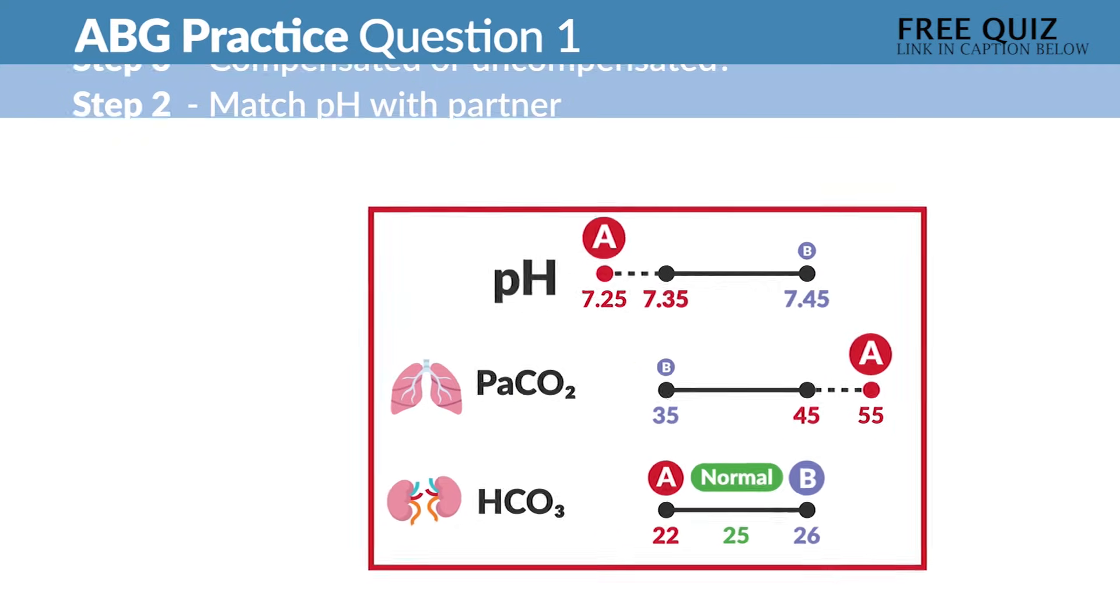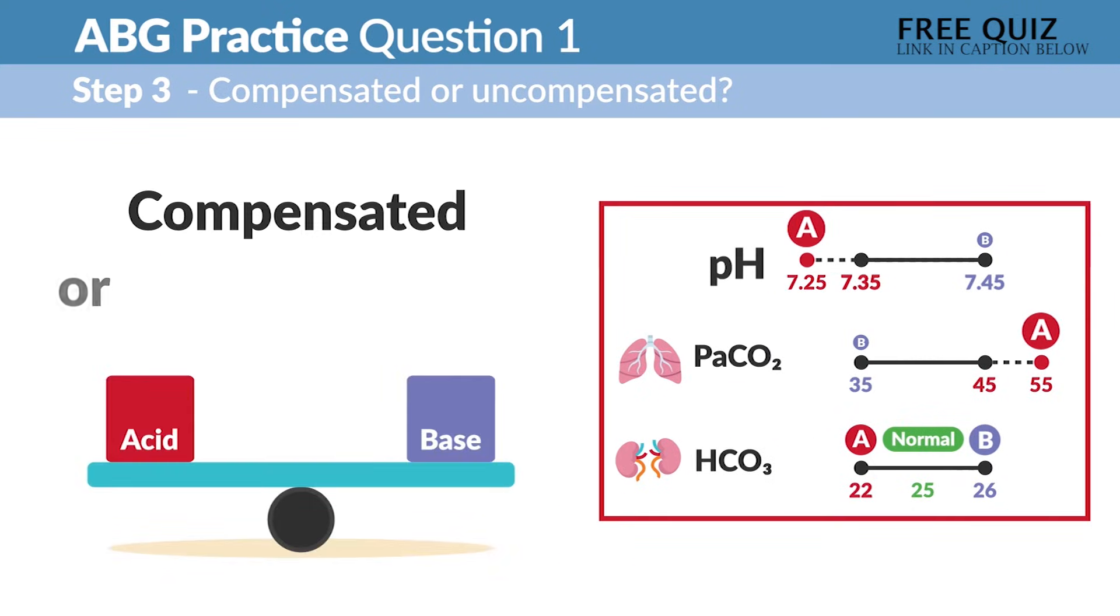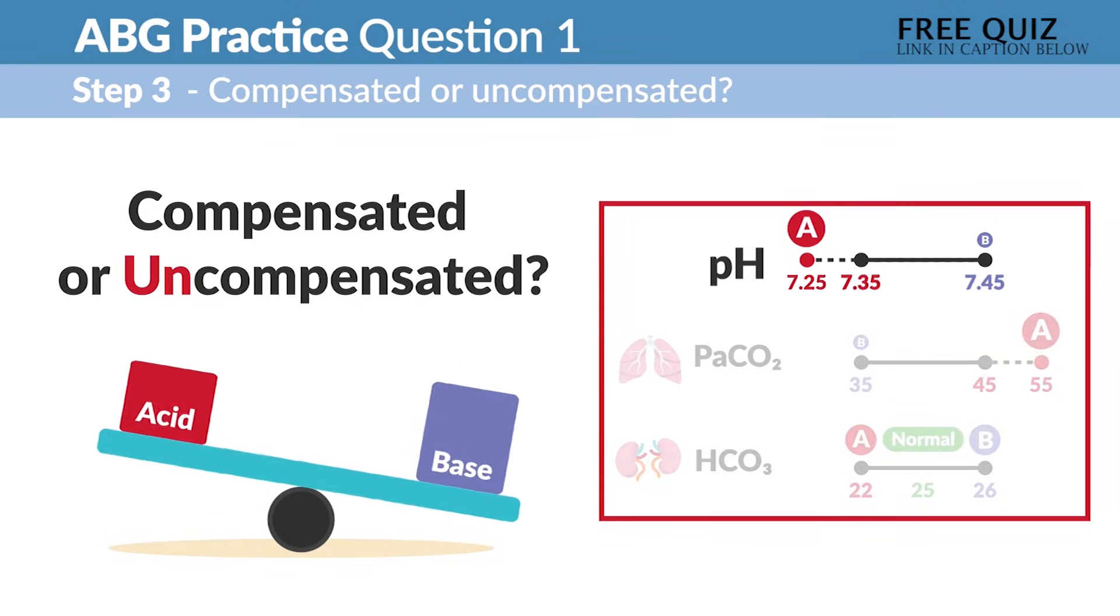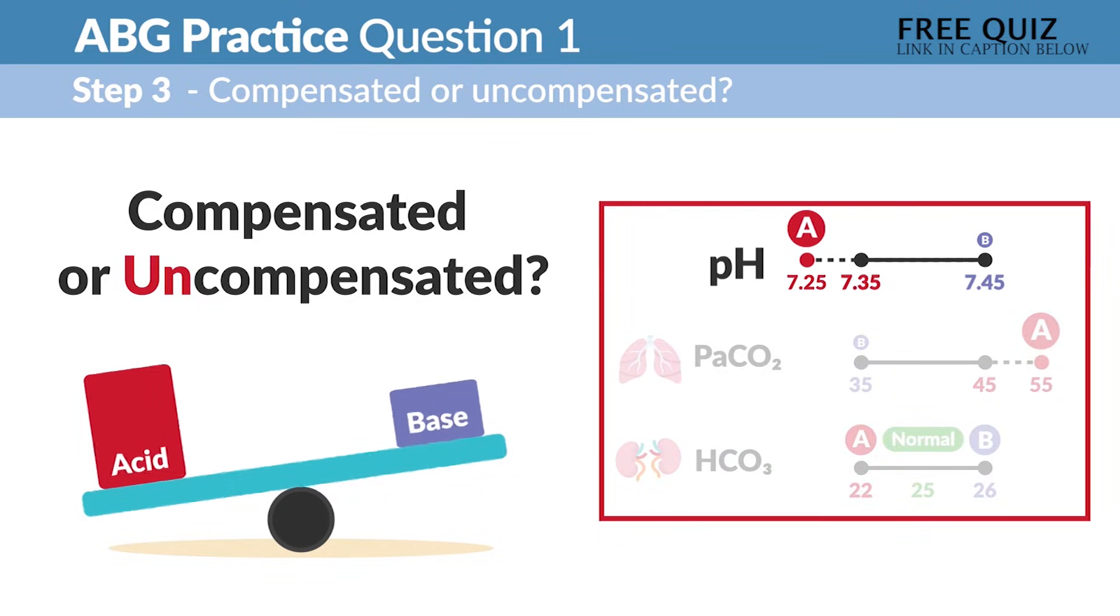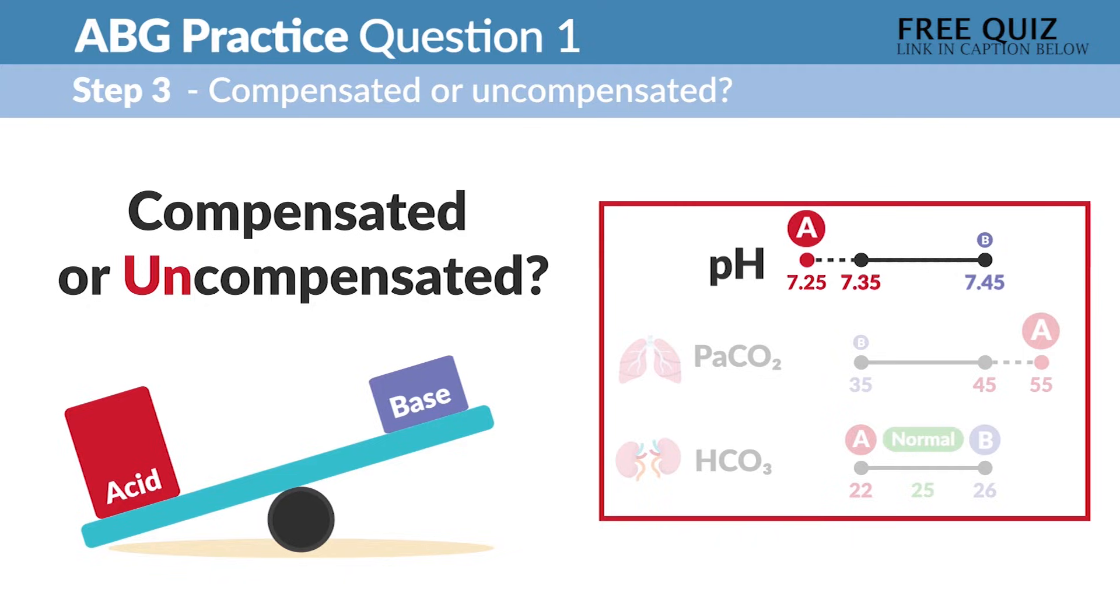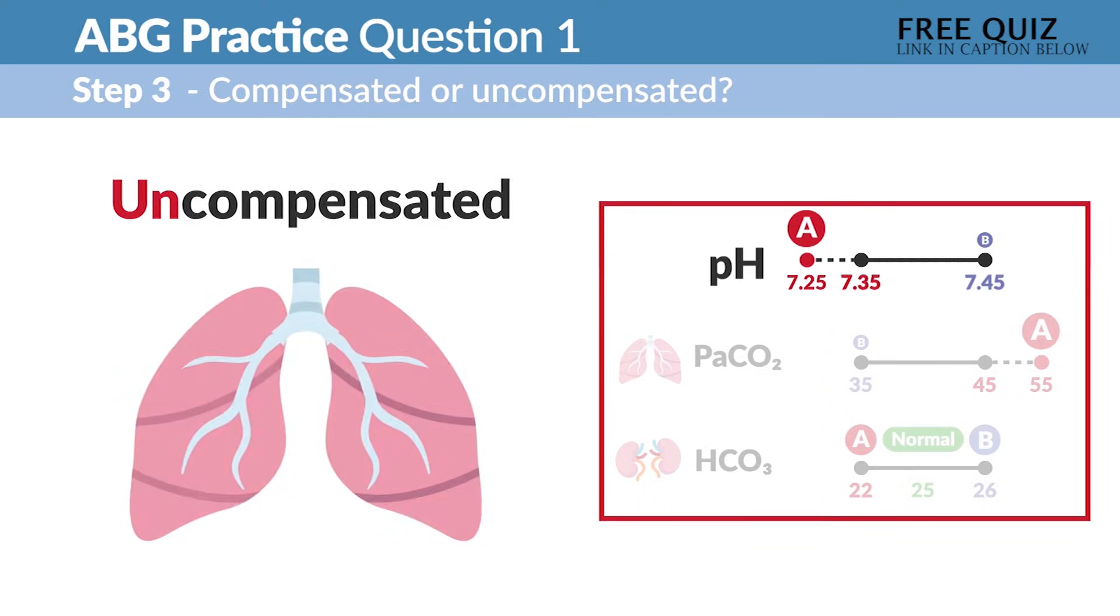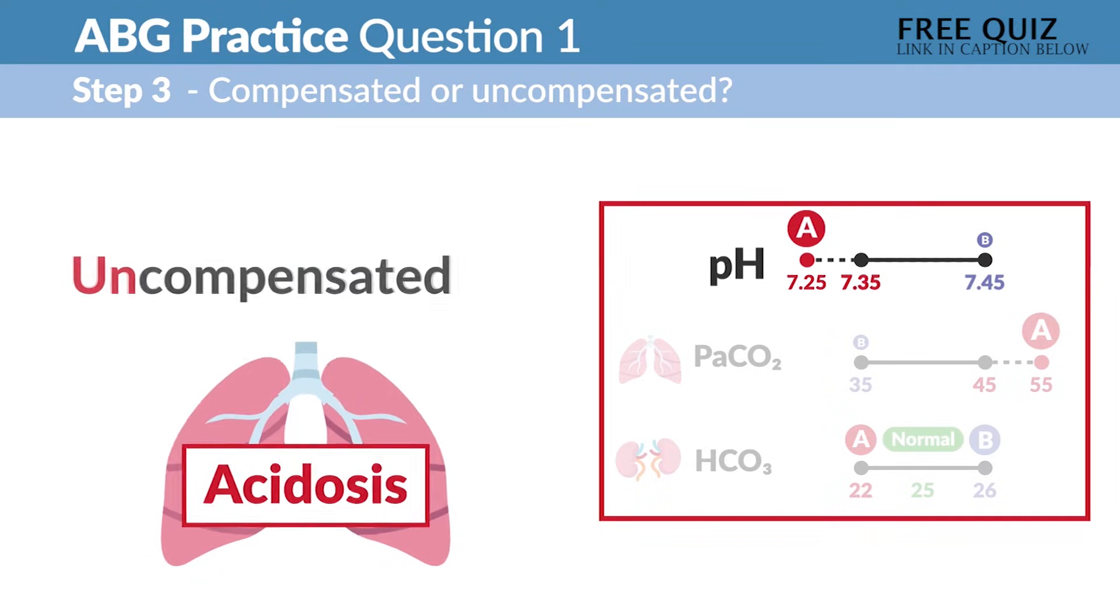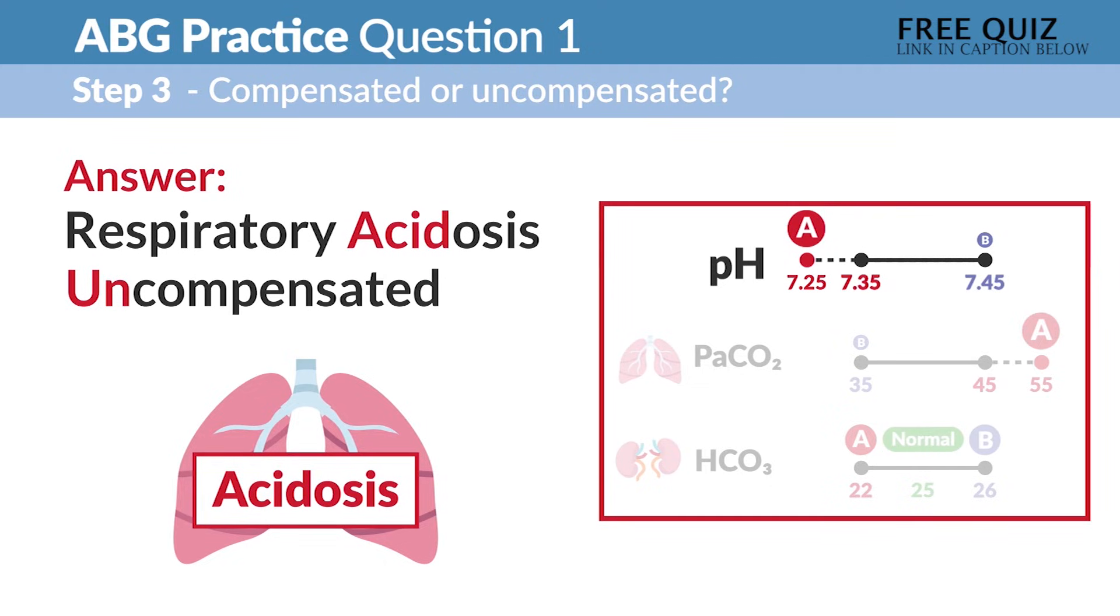Now step three: is it compensated or uncompensated? So you have to ask yourself, look at the pH, is it normal? Well no, so it's not in balance. It did not find common ground of compensation, so it would be uncompensated since it's very unfriendly here.